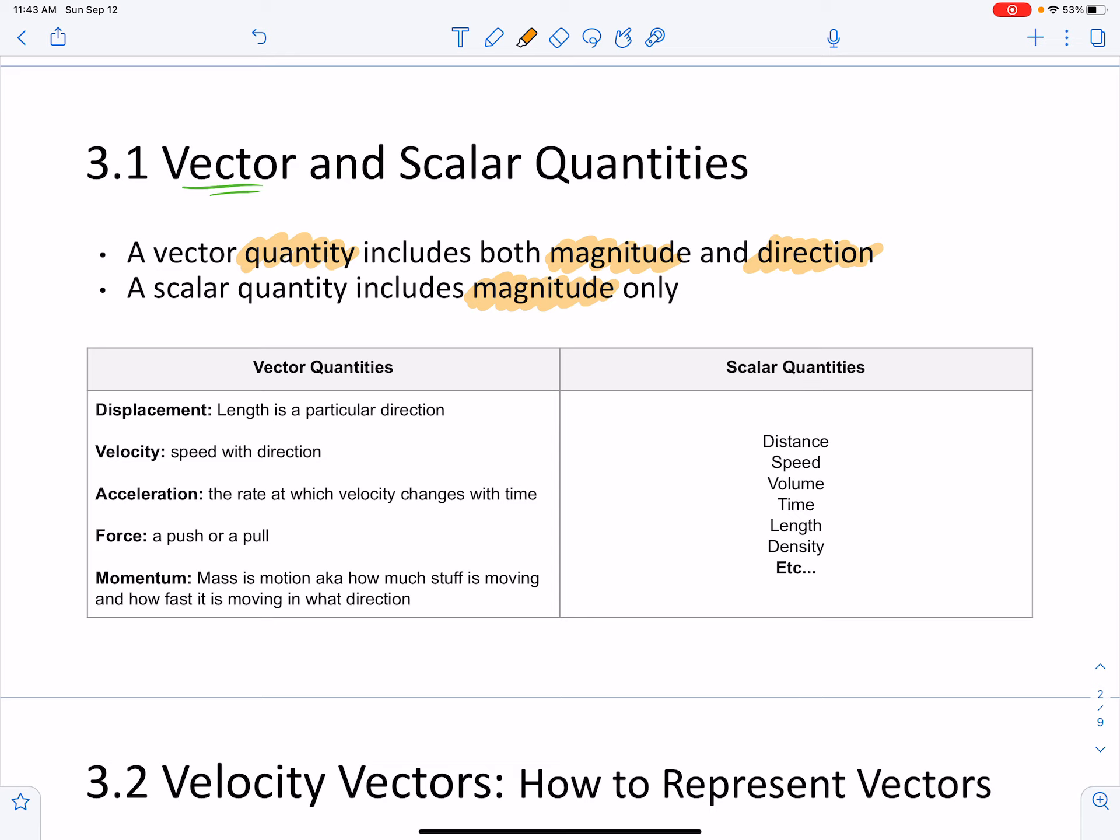Some examples of this are displacement is a length in a particular direction. Velocity, we said, was speed with direction. Acceleration is the rate at which velocity changes with time, since velocity is a vector. Acceleration is a vector. And then force. Force is a push or pull. It's a vector.